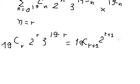That gives us 3 to the power of 19 minus r minus 1, which equals 3 to the power of 18 minus r.